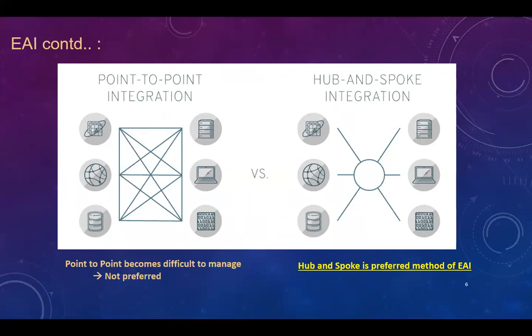In order to overcome that, came the concept of hub and spoke integration. In hub and spoke, you have a centralized hub which is the heart of the integration. All applications sit around that hub, and if application A wants to communicate with application B, it has to go via the hub. Hub and spoke is the preferred way of integration used in the IT industry. Point-to-point is used in certain places but is not recommended. In a very small company with just three systems, point-to-point works, but in a large company, hub and spoke architecture is what's being followed.